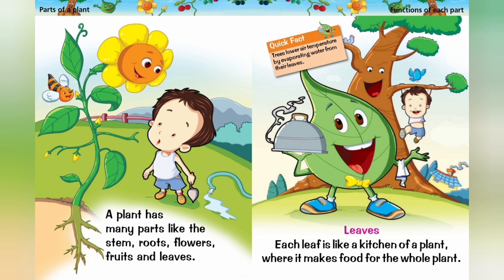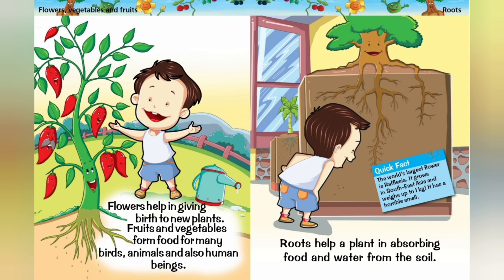Trees lower air temperature by evaporating water from their leaves. Flowers, Vegetables and Fruits: Flowers help in giving birth to new plants.